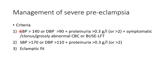Severe preeclampsia is defined by: systolic BP >140 mmHg or diastolic BP >90 mmHg plus proteinuria >0.3 g/L (>2+) along with symptoms, clonus, or grossly abnormal investigations; OR systolic BP >170 mmHg or diastolic BP >110 mmHg plus proteinuria >0.3 g/L; OR an eclamptic fit. If any of these three criteria are present, the patient is classified as severe preeclampsia.